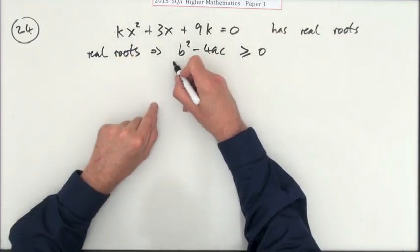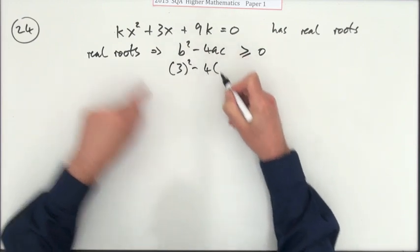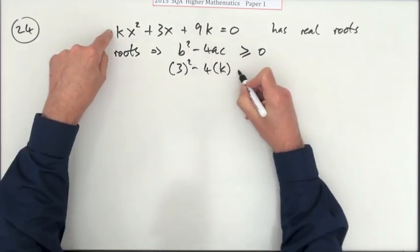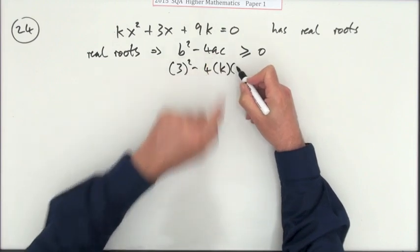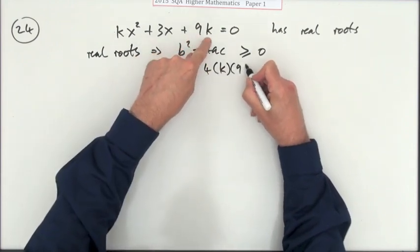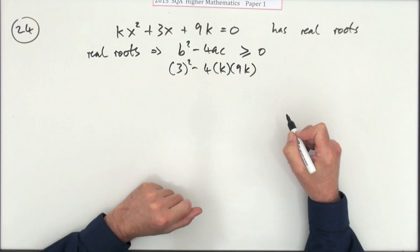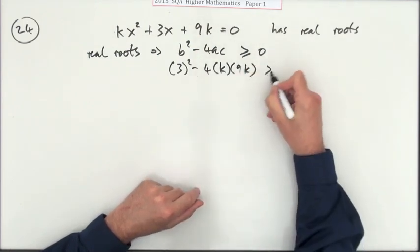So that will be 3 squared minus 4 times a, which is the coefficient of x², times c, which is this part at the end, the absolute coefficient, the constant. That should be greater than or equal to zero.